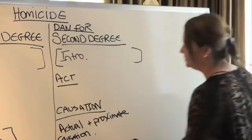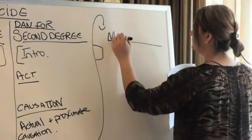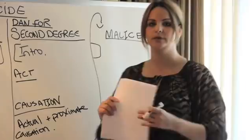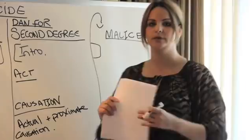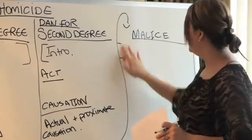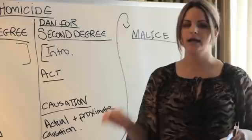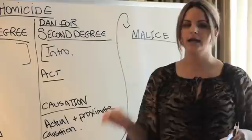Next, you have to establish malice. Any one of the four types of malice will suffice for a second degree murder conviction. But there's a trick to know which ones you have to go into. The first three types of malice will always come together: intent to kill, intent to inflict great bodily injury, and reckless disregard. Those will all three need to be discussed — if one is at issue, the other two are at issue.